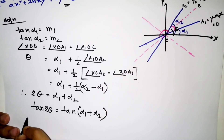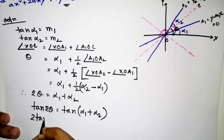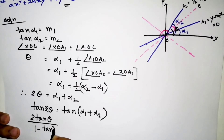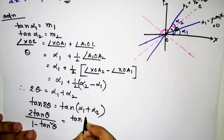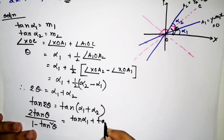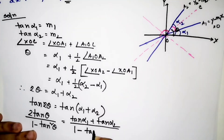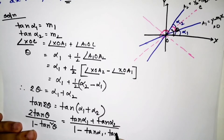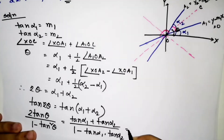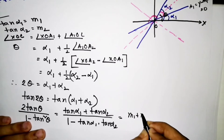Using the double angle formula: 2tan(θ) / (1 − tan²θ) = tan(α₁ + α₂) = (tan α₁ + tan α₂) / (1 − tan α₁ · tan α₂) = (m₁ + m₂) / (1 − m₁m₂).